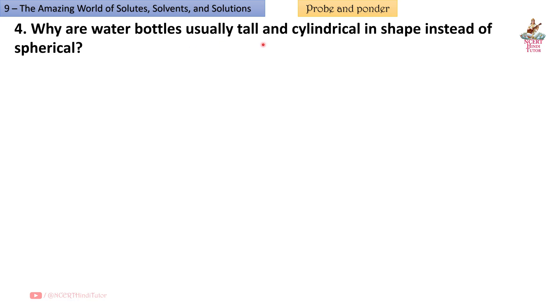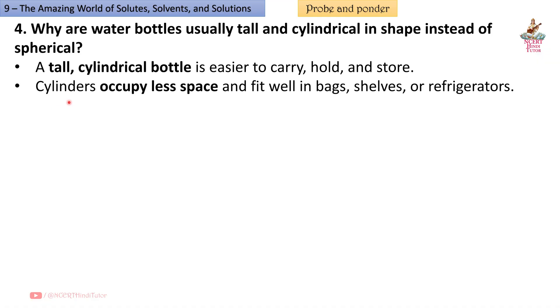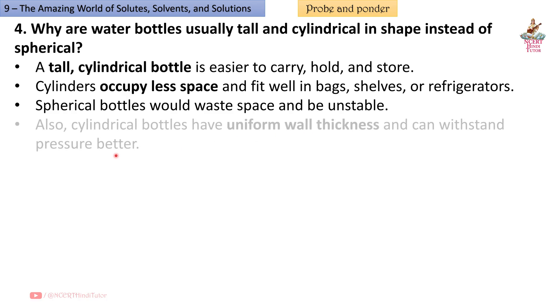Question 4: Why are water bottles usually tall and cylindrical in shape instead of spherical? Answer: A tall cylindrical bottle is easier to carry, hold and store. Cylinders occupy less space and fit well in bags, shelves or refrigerators. Spherical bottles would waste space and be unstable. Also, cylindrical bottles have uniform wall thickness and can withstand pressure better.